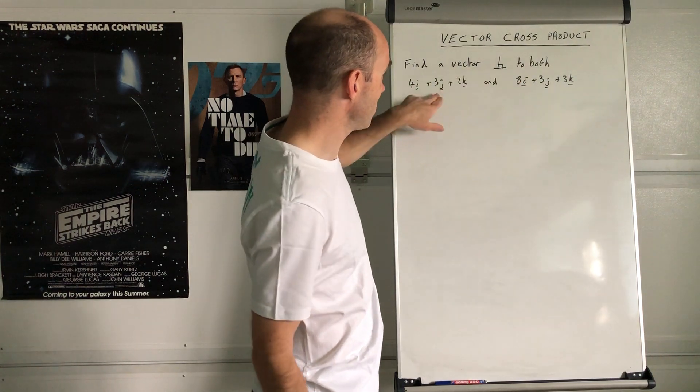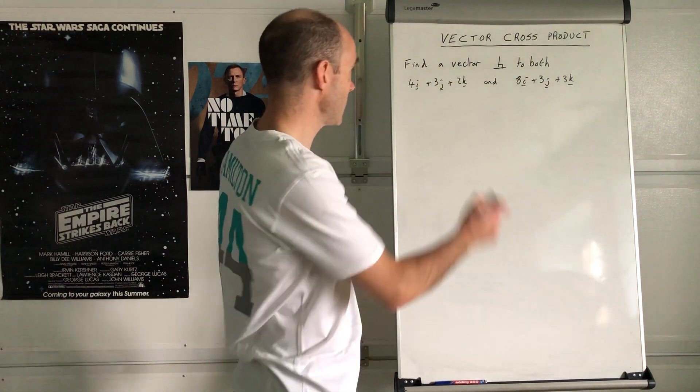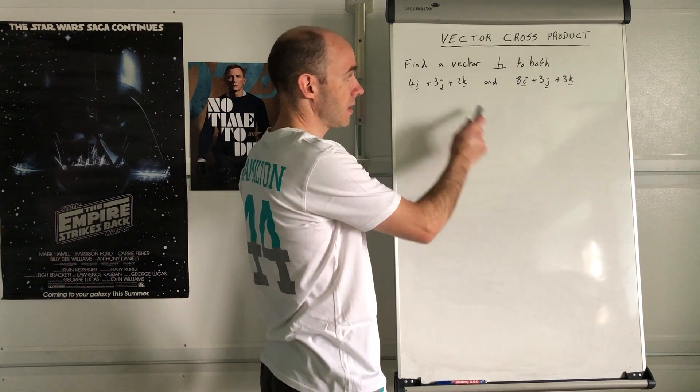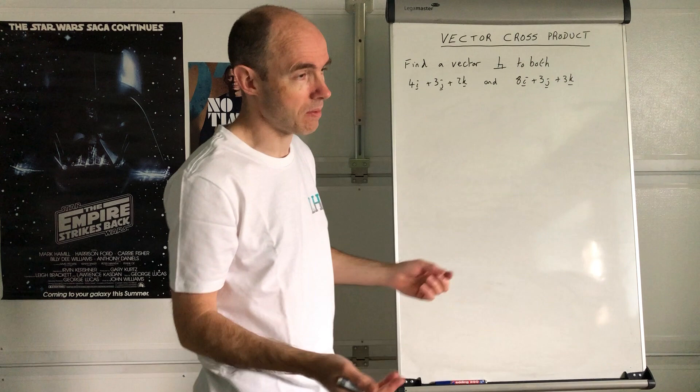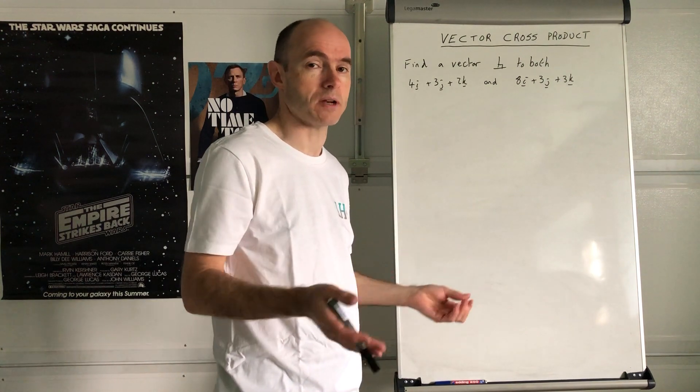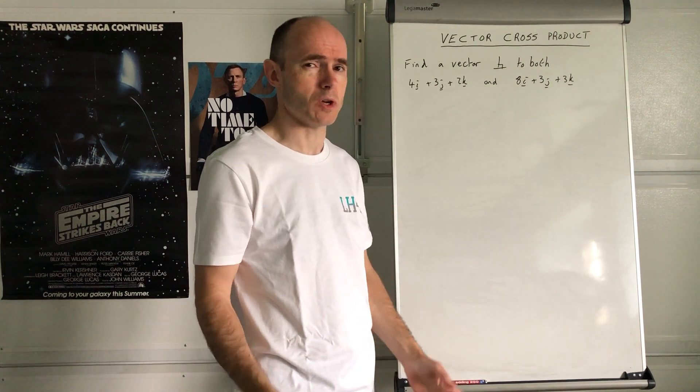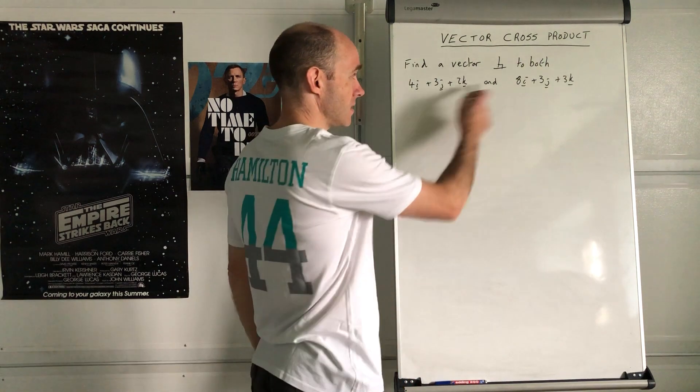You've got a vector here 4i plus 3j plus 2k and a vector here 8i plus 3j plus 3k. For example, in an applied maths or mechanics question, you might want to know a direction that's perpendicular to these two.